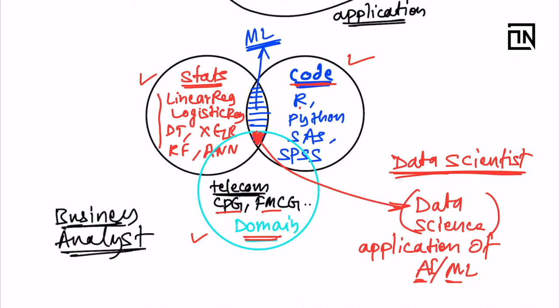So a business analyst is somebody who can interact with the clients and understand their pain points and translate those pain points into technical requirements. So you work with these guys, you work with business analysts to understand the domain portion, and then use your knowledge of statistics and coding to implement machine learning solutions for that domain, and that's how you become a data scientist.